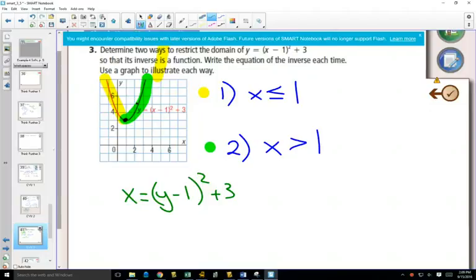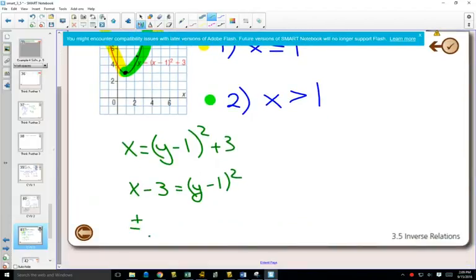So, solving for this, we'd subtract 3 on both sides. This is the algebraic way to find an inverse. And, when we square root both sides, we get plus or minus.